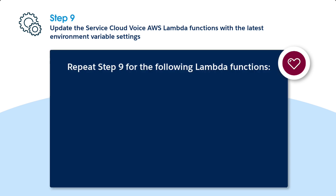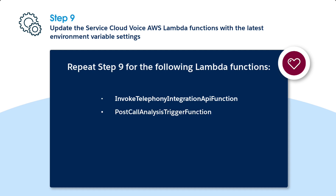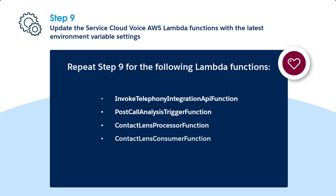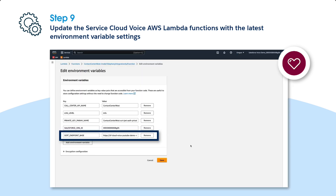Repeat the steps for the following Lambda functions to change the Org ID reference: Invoke Telephony Integration API function, Post Call Analysis Trigger function, Contact Lens Processor function, Contact Lens Consumer function, and KVS Transcriber. Before we move on, ensure that the SKRT endpoint base value and environment variable is accurate.